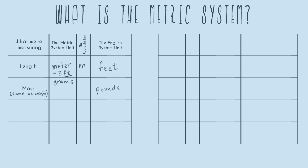The abbreviation for grams is a lowercase g. To illustrate the difference: a gram of sugar is just a quarter of one teaspoon — really, really tiny. A pound of sugar is a full box. So even though both measure mass, a gram is very tiny compared to a pound, which is more of what we're used to in the English system.